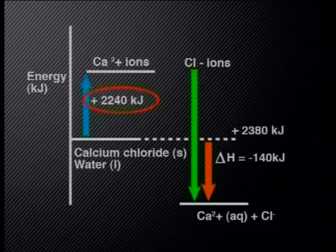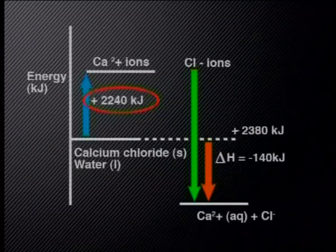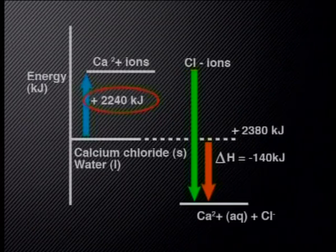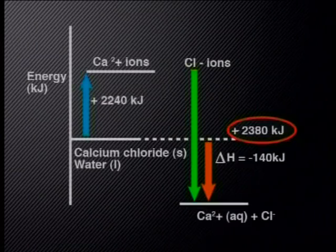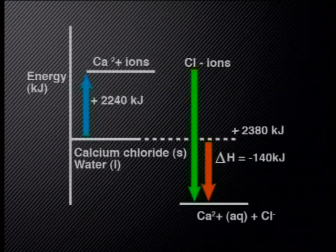Scientists have measured the quantity of energy transferred to make and to break bonds between different kinds of atoms or molecules. It takes about 2240 kilojoules of energy to break the ionic bonds holding calcium and chlorine in a given mass of the ionic salt. So the calcium ions and chloride ions have about 2240 kilojoules more energy than a calcium chloride lattice. But about 2380 kilojoules is transferred out of these ions when they form bonds with water molecules. So overall, more energy is transferred into the surroundings than into the reacting molecules — this 140 kilojoules increases the temperature of the solution.